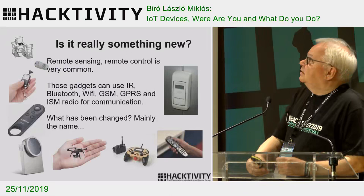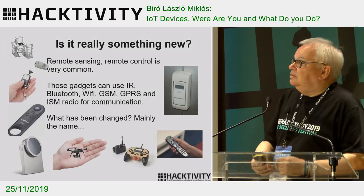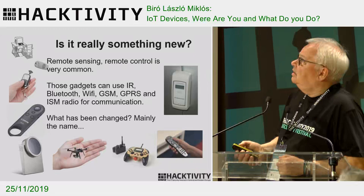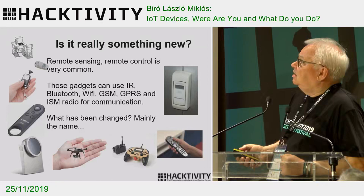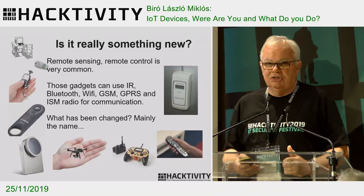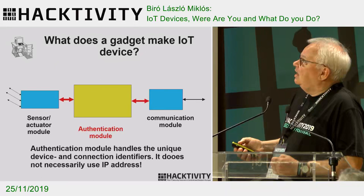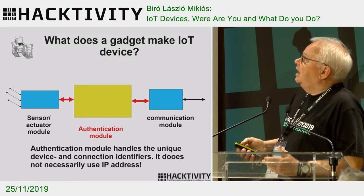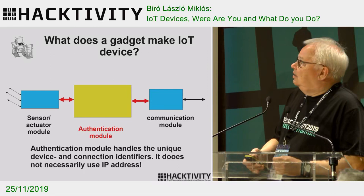We have a lot of gadgets that seem to be IoT but not all of them are IoT systems. We should decide what is the difference between a simple remote control, a Bluetooth device, a play console, or for example a heat consumption measuring system. The major difference is that IoT devices have an authentication module — between the sensor, the actuator, and the communication unit there is very strict authentication. And it's not necessarily an IP address.